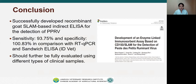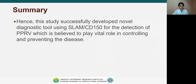In conclusion, we successfully developed a recombinant goat SLAM-based indirect ELISA for the detection of PPRV. The sensitivity of the assay was found to be 93.75% and specificity was 100% in comparison with RT-qPCR and sandwich ELISA. This test should further be evaluated using different types of clinical samples, and this work has been published in Frontiers in Veterinary Science. In summary, this study successfully developed a novel diagnostic tool using SLAM or CD150 for the detection of PPRV, which is believed to play a vital role in controlling and preventing the disease.